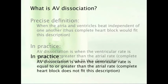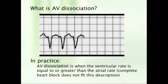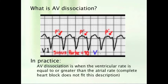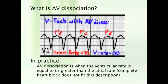Contrast this to ventricular tachycardia, another dangerous cause of AV dissociation. In this condition — VTAC — the AV dissociation is due to the ventricular rate being faster than the intrinsic sinus rate. In summary, know the terminology, know how to differentiate complete heart block from AV dissociation, and you should be fine.